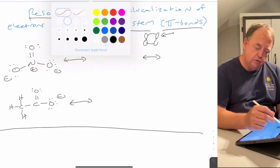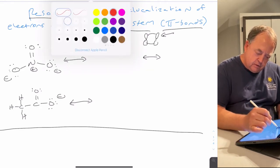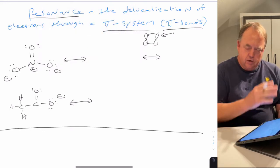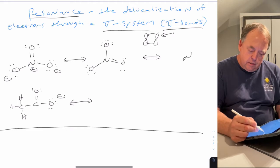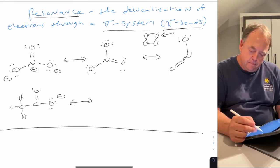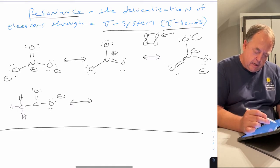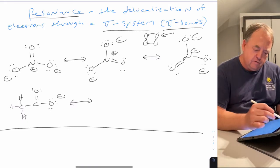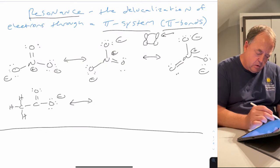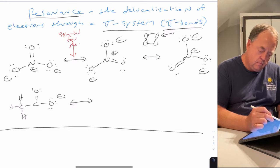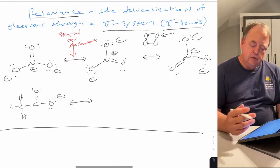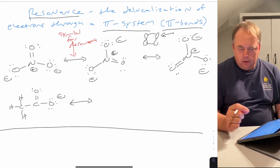If we draw resonance structures for nitrate, the double bond to oxygen doesn't have to be on the top oxygen — it could be on the oxygen to the right, or the oxygen on the left. We could draw nitrate like that, or like that, and these are all resonance structures of each other. This double-headed arrow is the symbol for resonance structures.